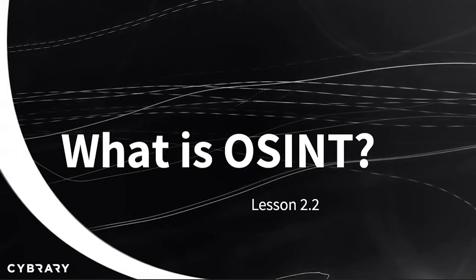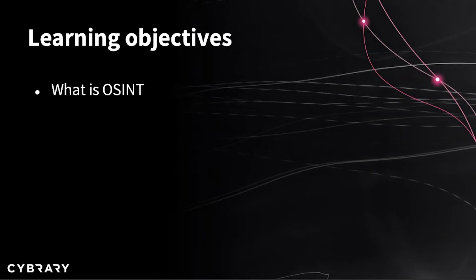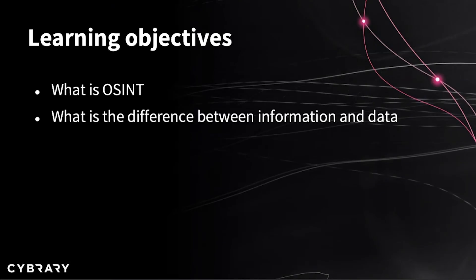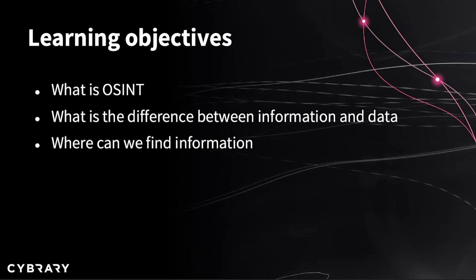Welcome back. In the last video we did a quick overview of the second module, and in this lesson some of the things you will learn are: what OSINT is, what is the difference between information and data, where we can find information, and we will go through the internet structure since it is considered our main source of open-source intelligence.